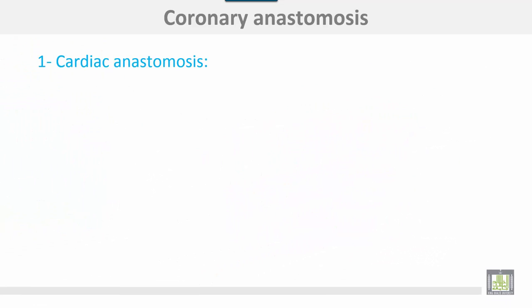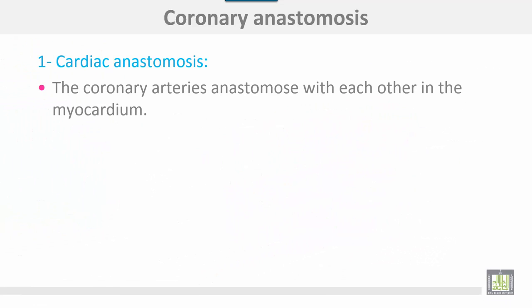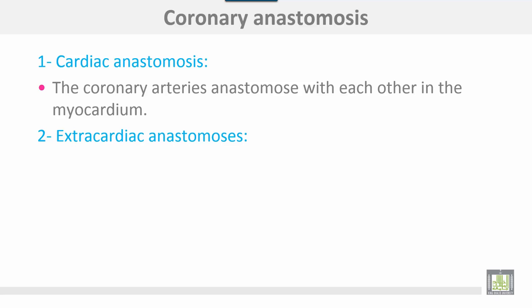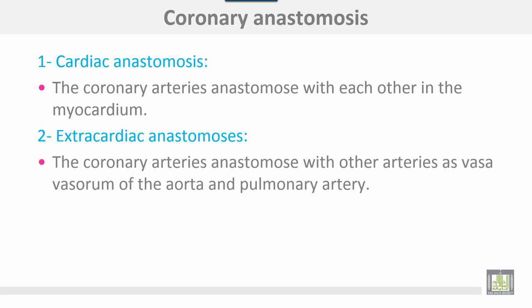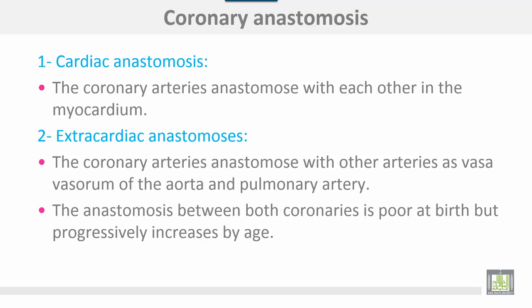Coronary anastomosis — the coronary arteries anastomose with each other within the myocardium. Extracardiac anastomosis occurs as the coronary arteries anastomose with each other as vasa vasorum of the aorta and pulmonary artery. Anastomosis between both coronaries is poor at birth but progressively increases with age.